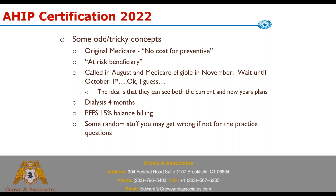There are a couple of odd tricky questions. One to keep note of: there's an Original Medicare question that mentions no cost for preventive services. They're going with the theme that Original Medicare covers preventive services at no cost. And then there's the new rule for at-risk beneficiaries — if somebody is designated an at-risk beneficiary, they do not have a special election even if they're a dual eligible. Keep that in mind: if a question says someone has been deemed at-risk and they're a dual eligible wanting a plan change, you logically think you can change them, but you can't because they've been defined as at-risk.